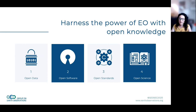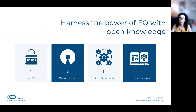Open software: any kind of software developed during the research process should be released under an open license and in accordance with FAIR and TRUST principles. There is also the open source and open code movement and open science, which is gaining momentum very much through the efforts of projects such as OpenEO Monitor and the open source communities like OpenGeo and others.